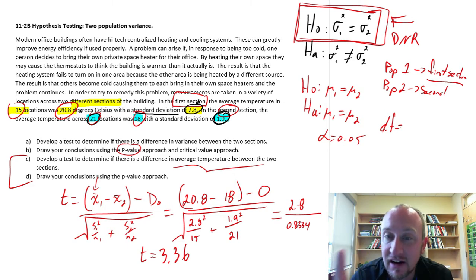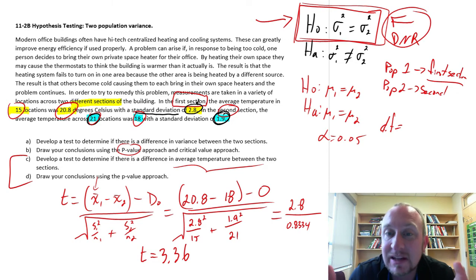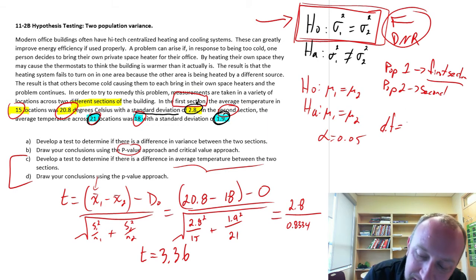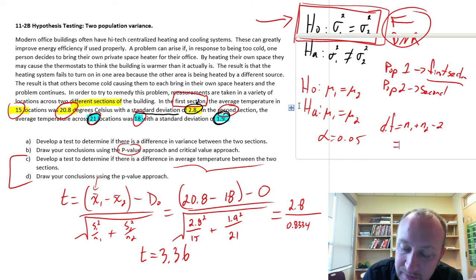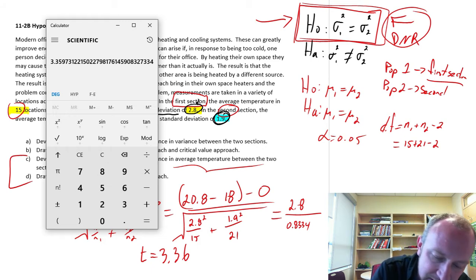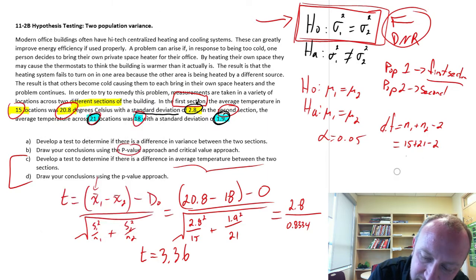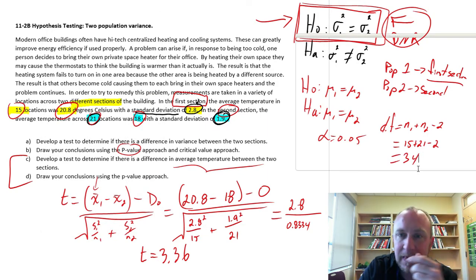If the variances are unequal, you might remember there's a huge big ugly formula that we had to use to calculate the degrees of freedom. But if the variances are unequal, having just done this test and found that we have no reason to believe that the variances are different, we did not reject that hypothesis, we can calculate our degrees of freedom simply as n₁ + n₂ - 2, a much much simpler calculation. So this is going to be just 15 plus 21 minus 2, so let's just calculate that: 15 plus 21 minus 2, 34 degrees of freedom.